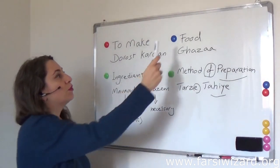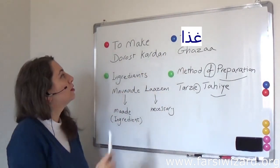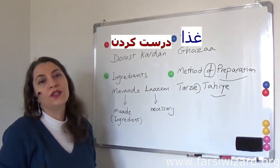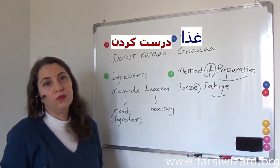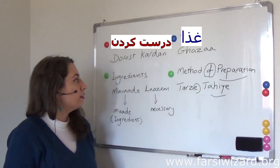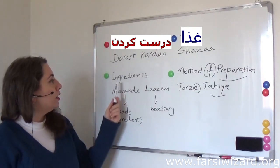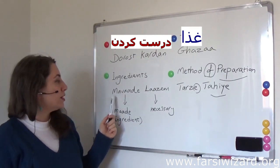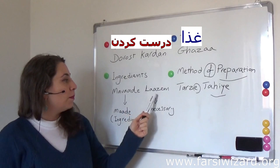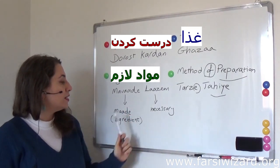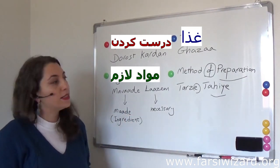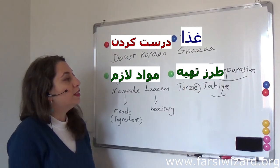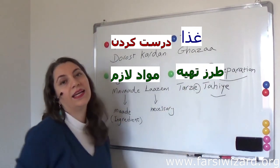Let's review. Food is 'qaza.' To make is 'dorost kardan,' so to make food is 'qaza dorost kardan.' Ingredients translates to 'mawadeh lazim,' which means necessary ingredients. And method of preparation is 'tarze tahiyyeh.'